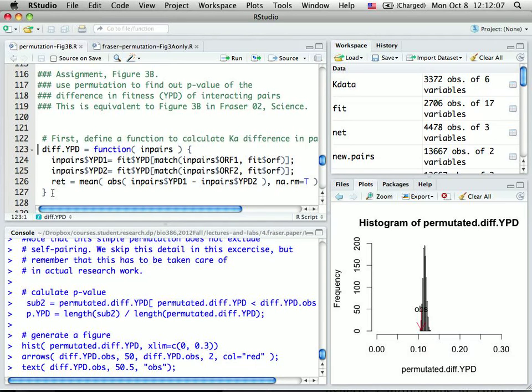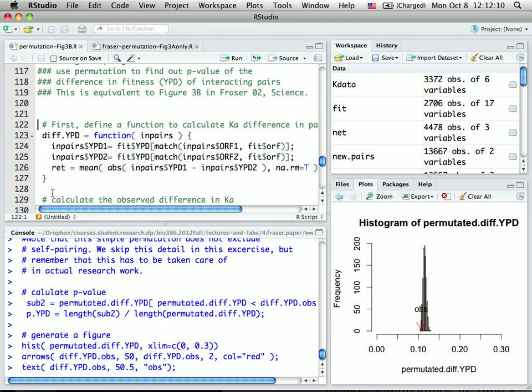So I first, since I know I'm going to calculate the average fitness between pairs many times, I first write a function and I call this diff.YPD. This is a function calculation based on pairs of genes.